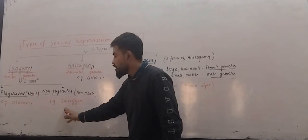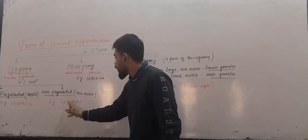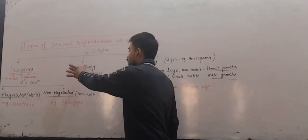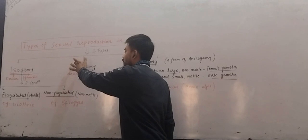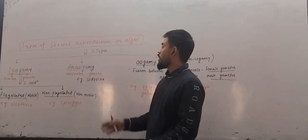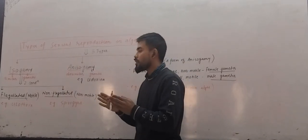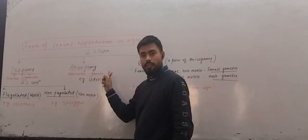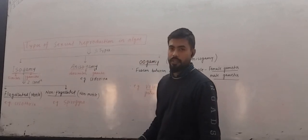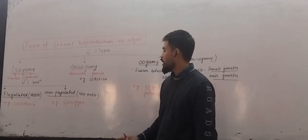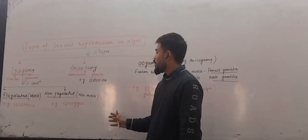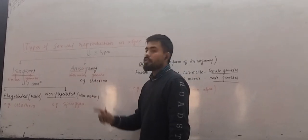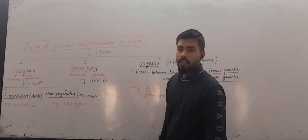The example of non-flagellated isogamy is Spirogyra. Secondly, we have anisogamy, which is the fusion of morphologically dissimilar gametes. The example of anisogamy is Eudorina.